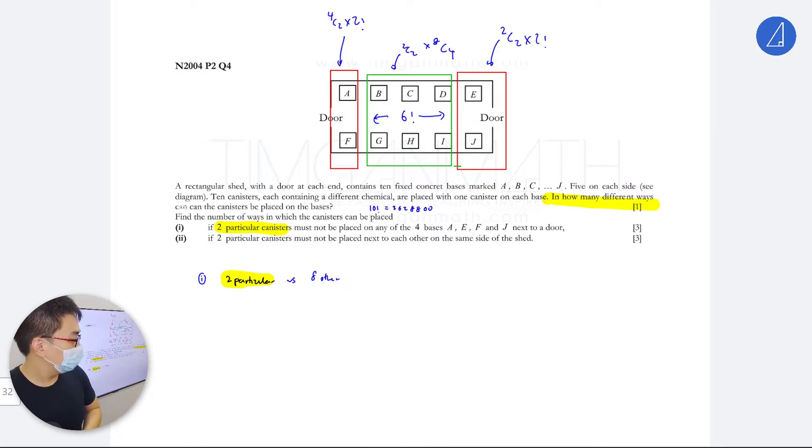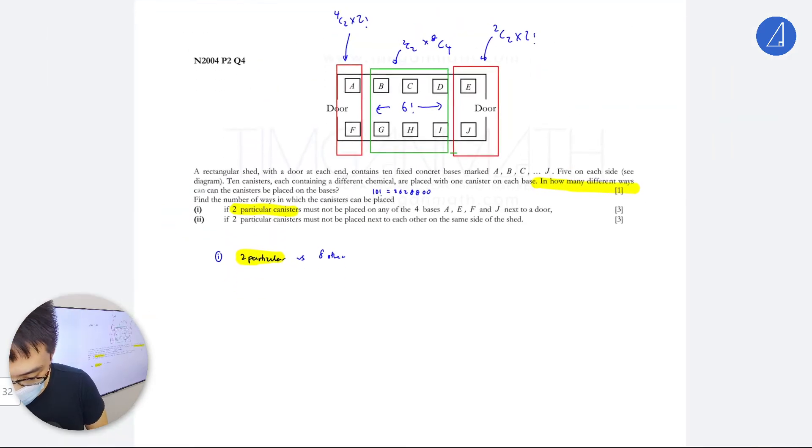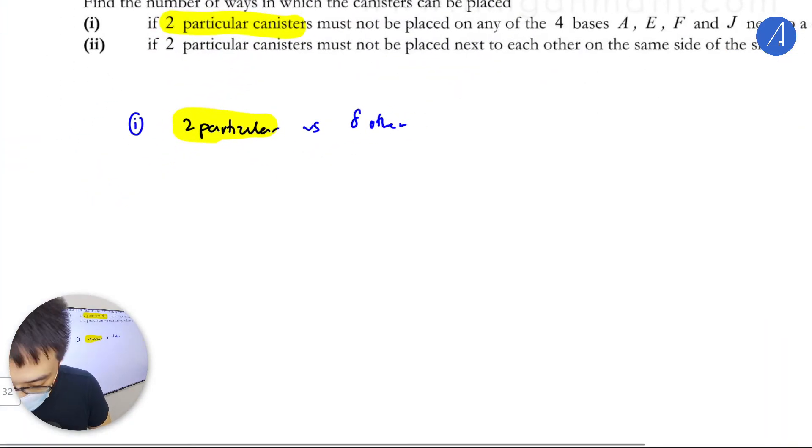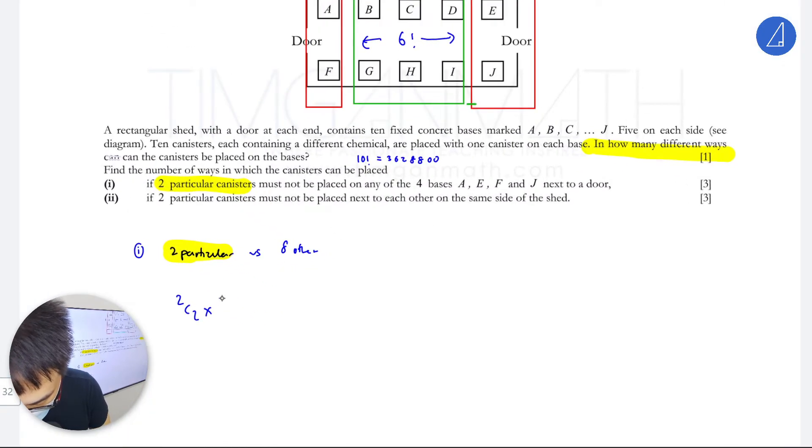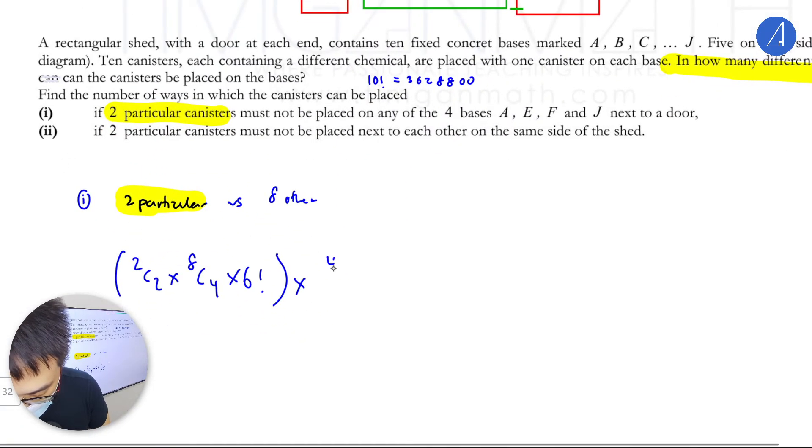So this is 2 choose 2 times 8 choose 4, then this will be 6 factorial. This is the first one. Then after that, 4 choose 2, then times 2 choose 2. Maybe I'll just write this down.